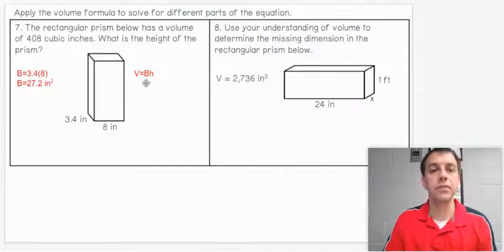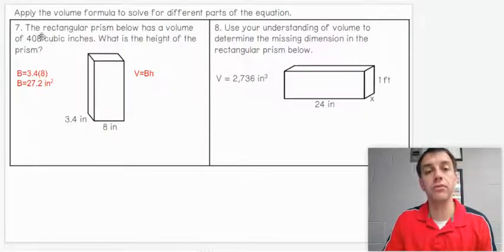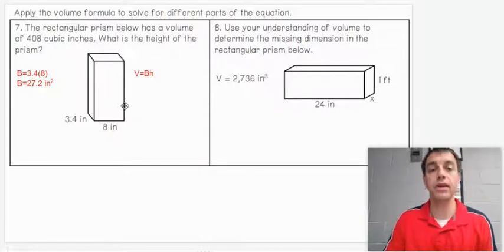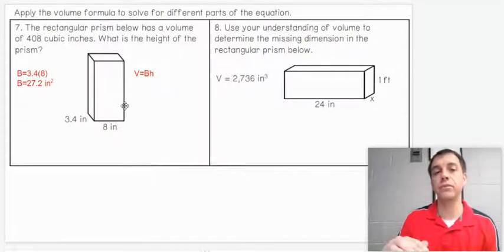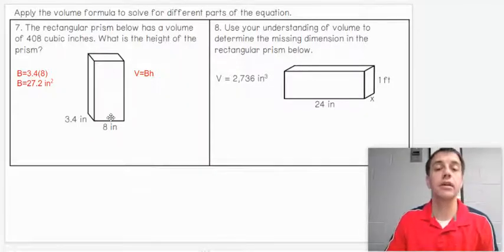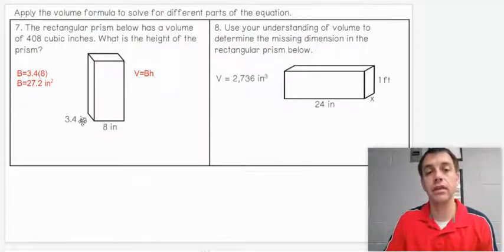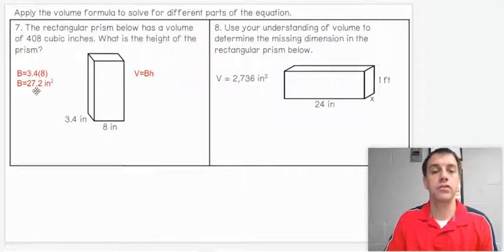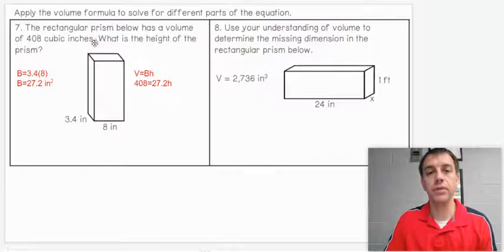Let's go ahead and find the base area first. 3.4 times 8 is going to give us 27.2 inches squared. Why did I find that first? Because if we're given the volume of 408 cubic inches, I know what the volume is. I don't know the height, which is what I'm looking for. But I can find the base area by simply multiplying the length times the width. So 27.2, I can now plug that back into my formula.